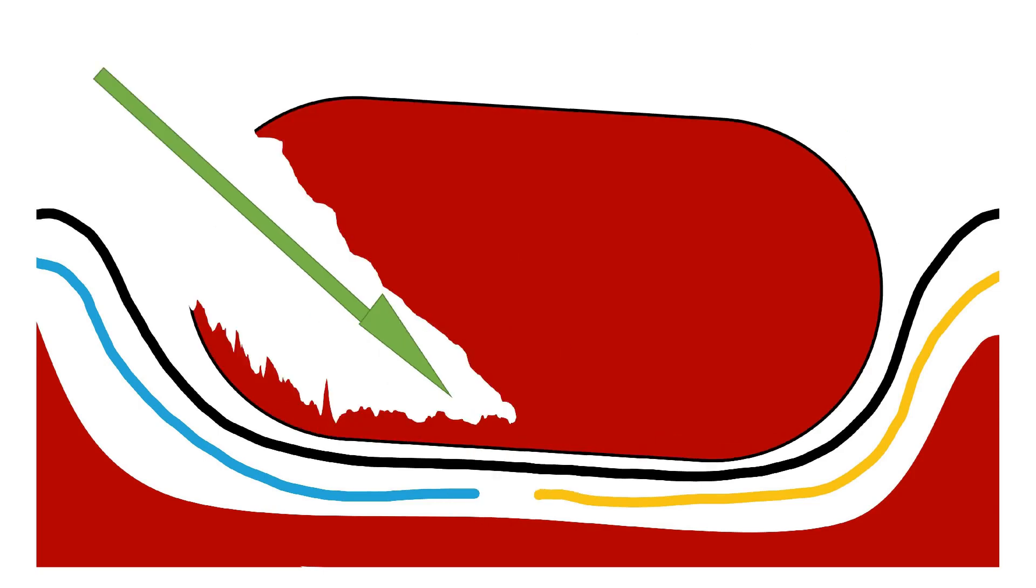One way around this problem is not to remove all of the tonsil, but to leave a thin sliver of tonsil overlying the tonsil bed, and therefore protecting the sensitive blood vessels and nerves. This type of operation is called an intracapsular tonsillectomy. This means that the dissection continues inside the tonsil rather than outside the tonsil, like in the cold steel method.